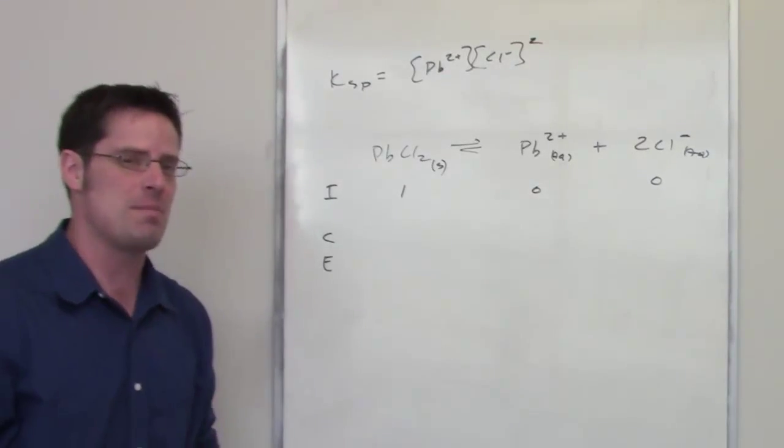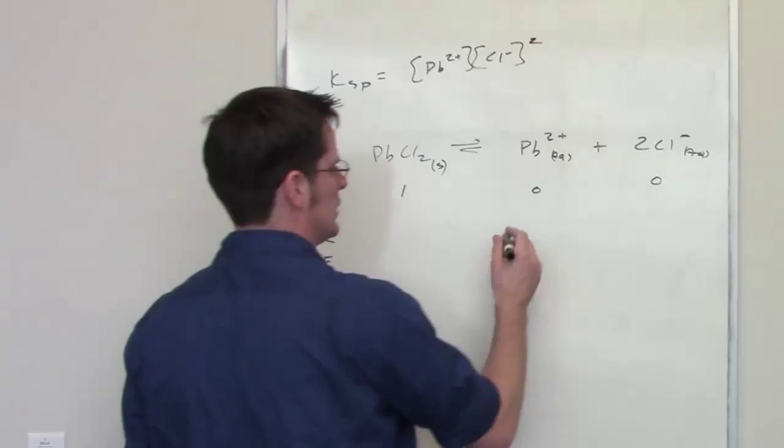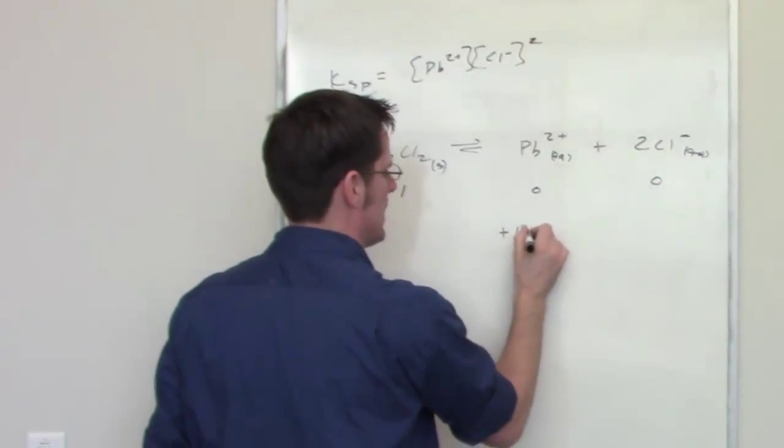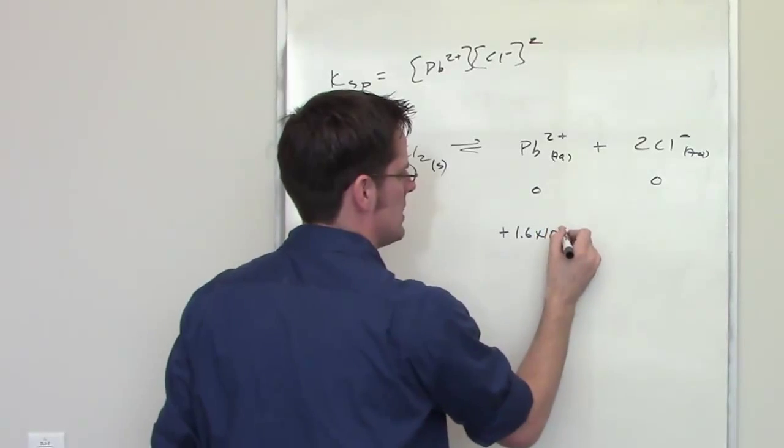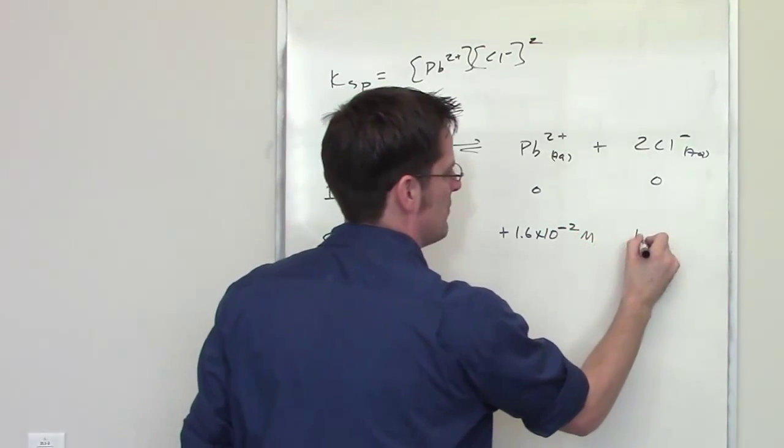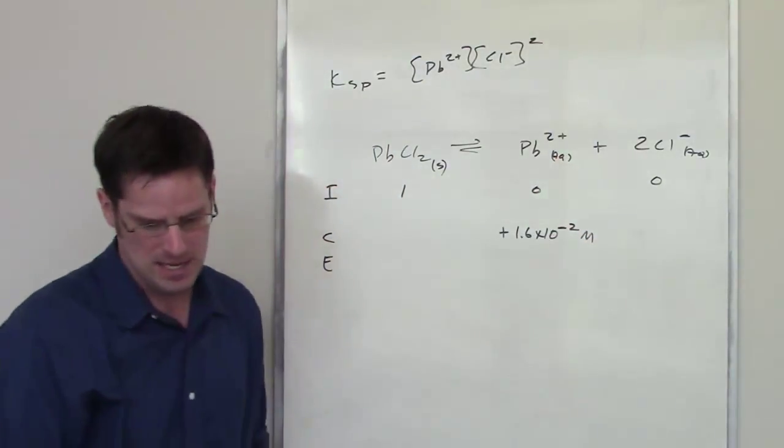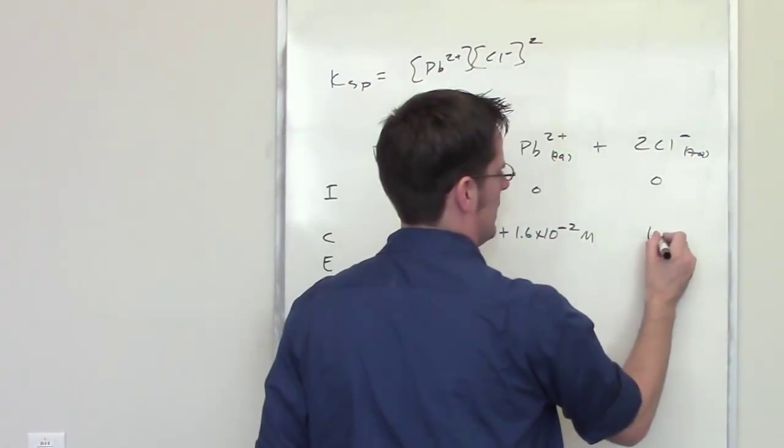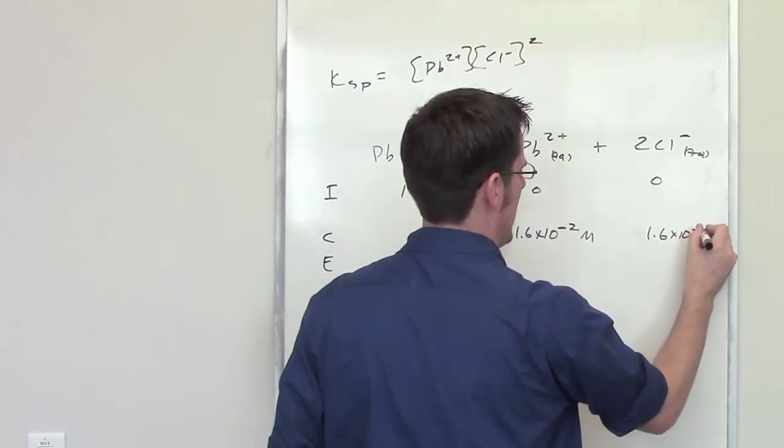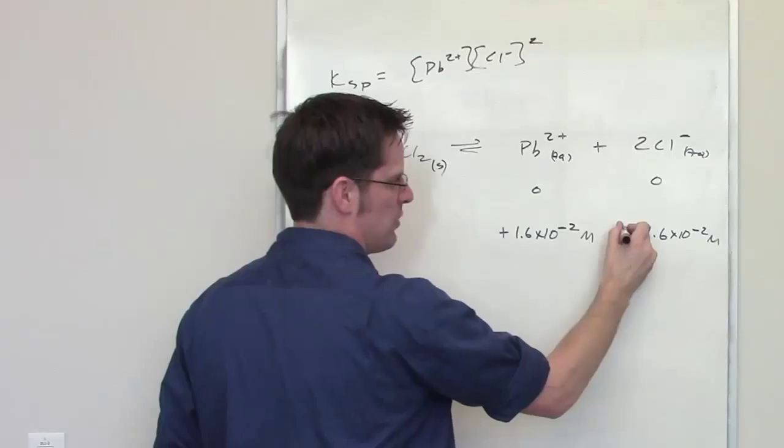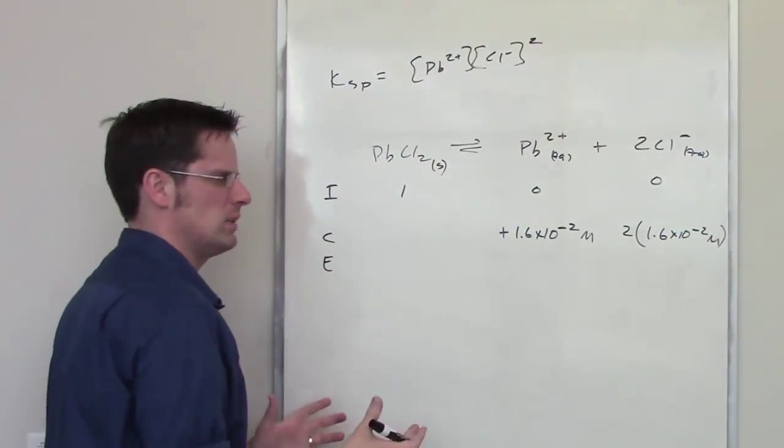The molar solubility that it gives us by the way is 1.6 times 10 to the negative 2 molar. That solubility amount is the amount by which each of these increases as we reach equilibrium. So I'm going to write down 1.6 times 10 to the negative 2 molar. That is the value for, that is the molar solubility for lead and it's also the molar solubility for chloride. However, because chloride has two molar equivalents of it in front of it, I have to go ahead and put a 2.